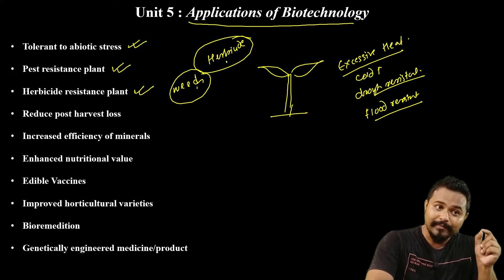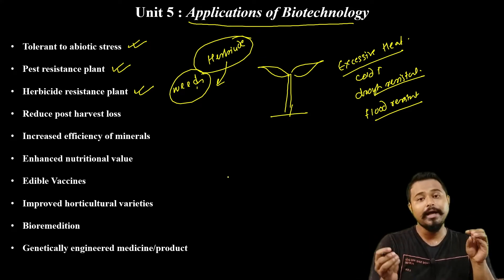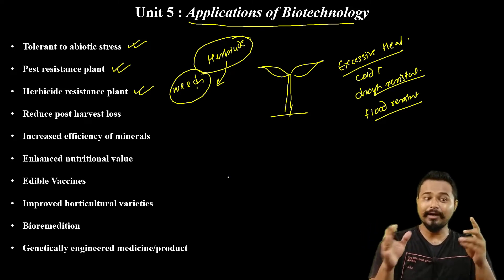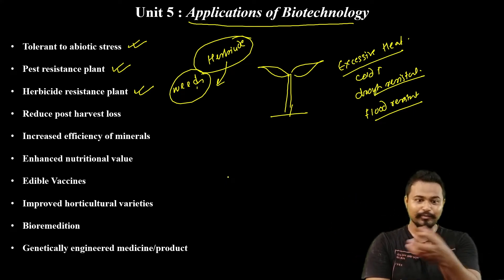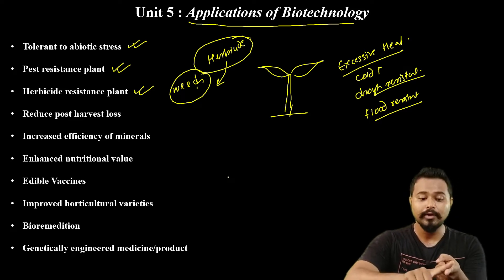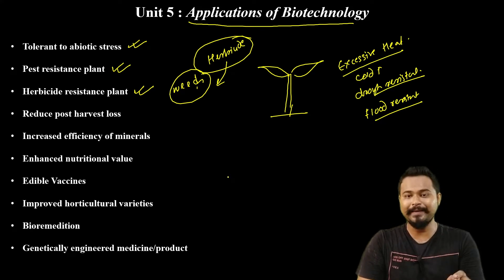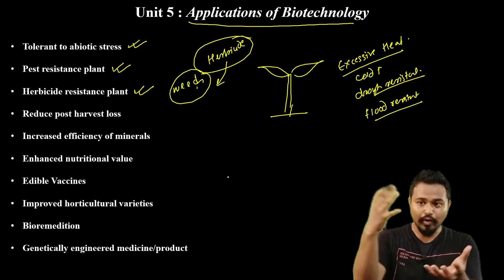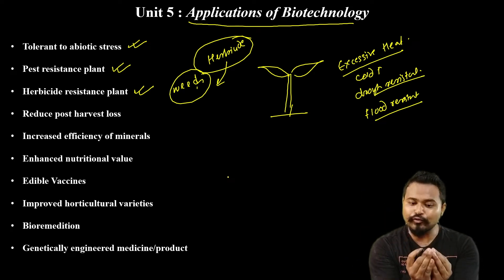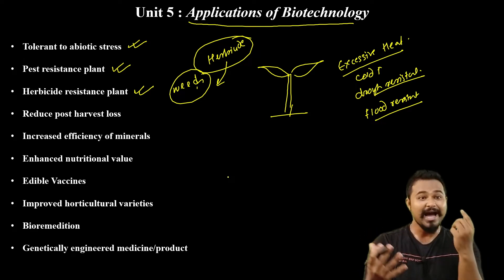Weeds grow in fields and we use herbicide to control them. If we apply herbicide or weedicide, it can have side effects on our crop plants. So we need to develop biotechnology plants with herbicide resistance so that we can safely apply herbicides to eliminate weeds without harming the crop.